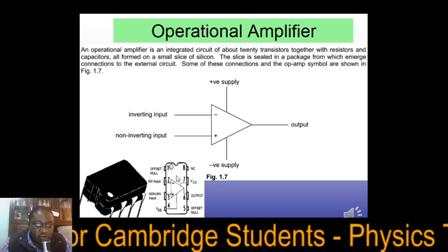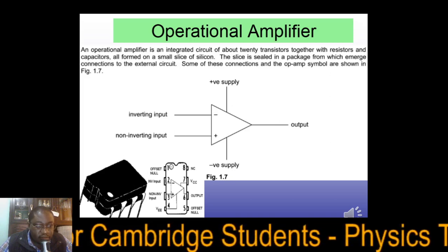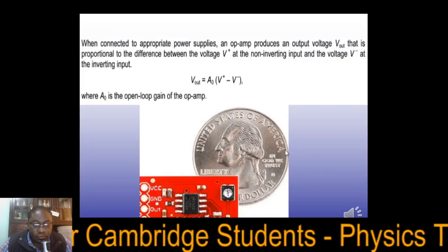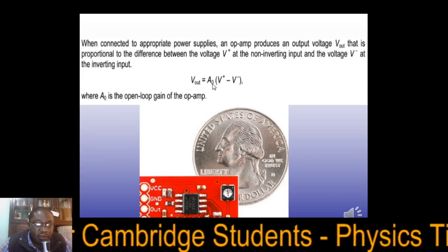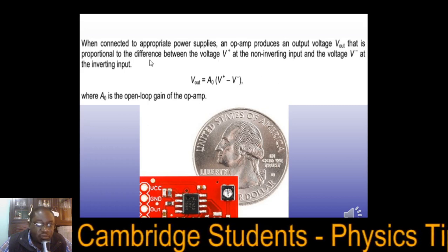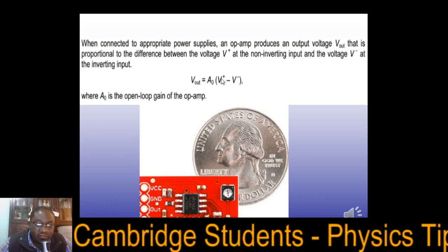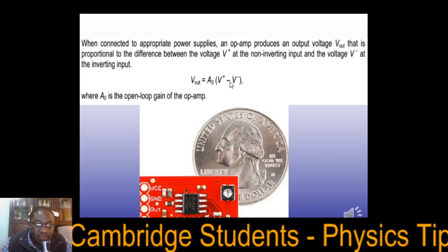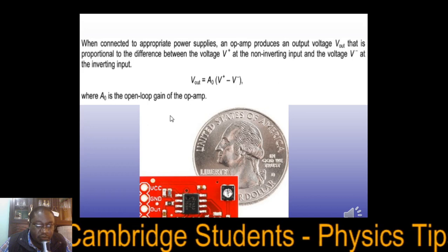An operational amplifier looks like this in real life — it has legs like that. When connected to an appropriate power supply, the operational amplifier produces V_out that is proportional to the difference between V+ and V−, that is the non-inverting and inverting inputs. The formula is: V_out = A₀(V+ − V−), where A₀ is the open loop gain.